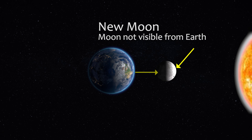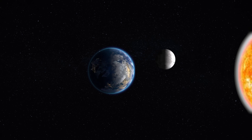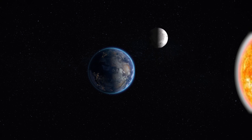Even though the Moon is up there available in the sky, since its surface facing the Earth is not lighted, we will not be able to see the Moon. Now let us see what happens when the Moon reaches the next position — some part of the Moon becomes visible when the Moon is at this location.